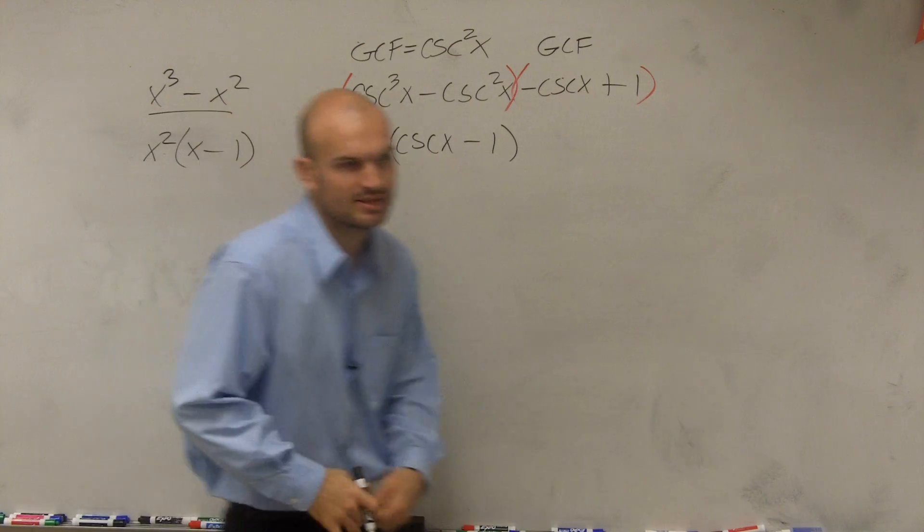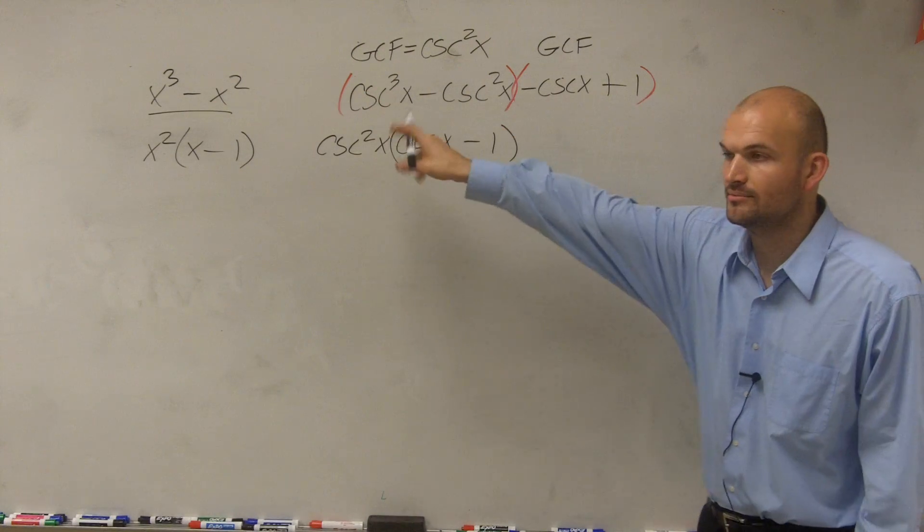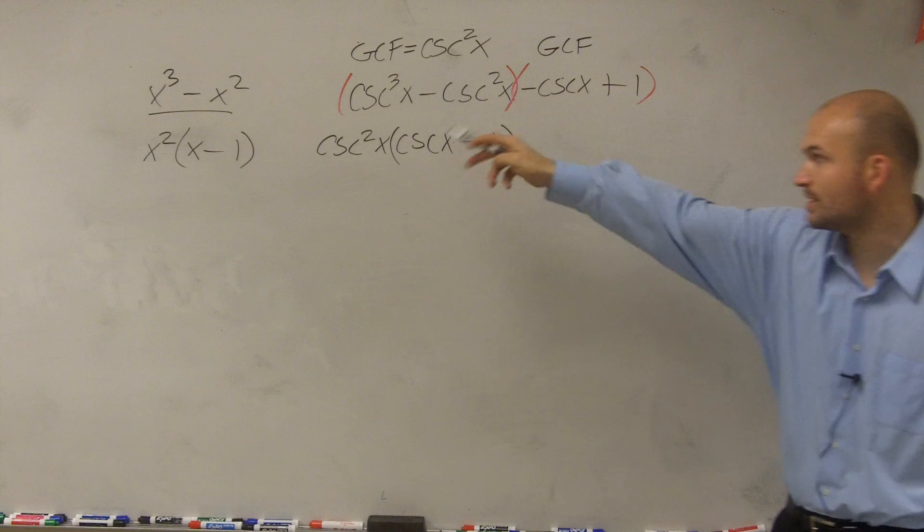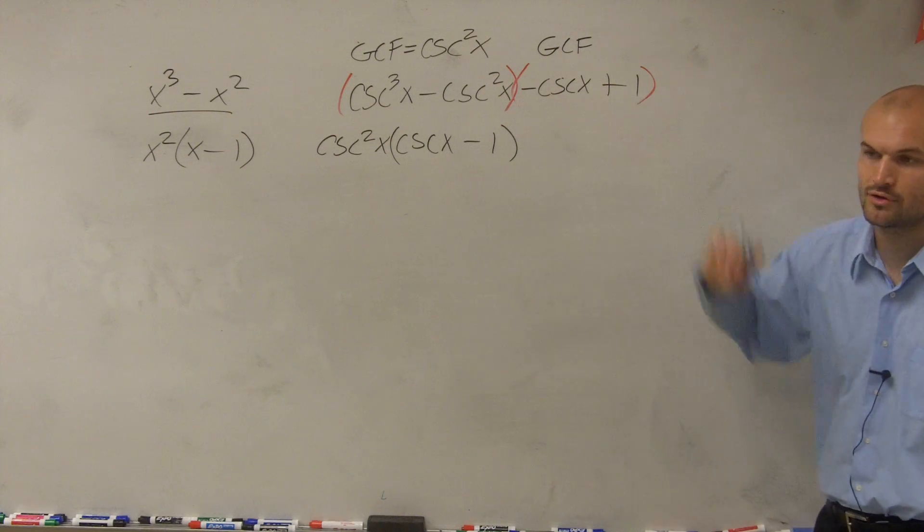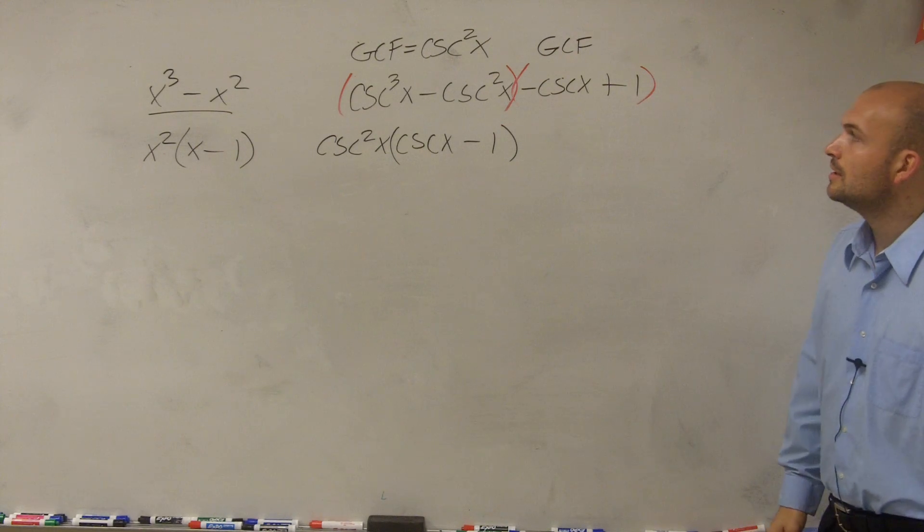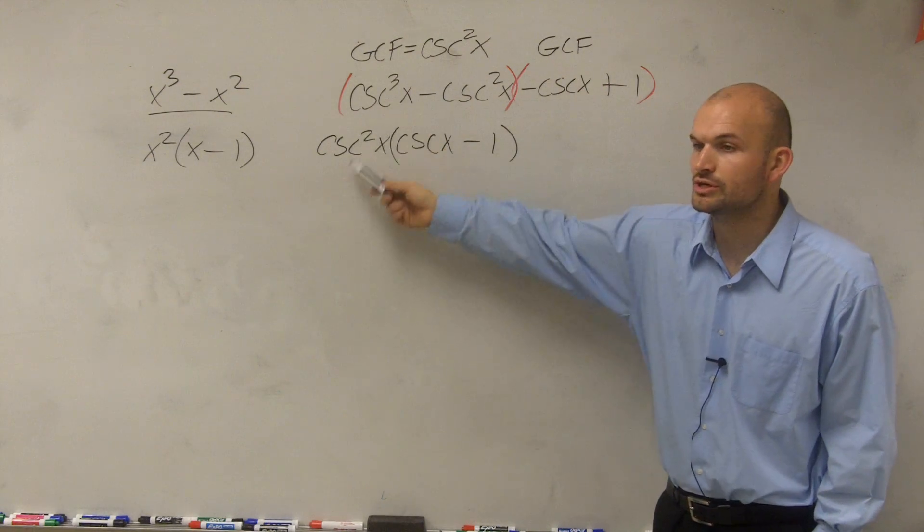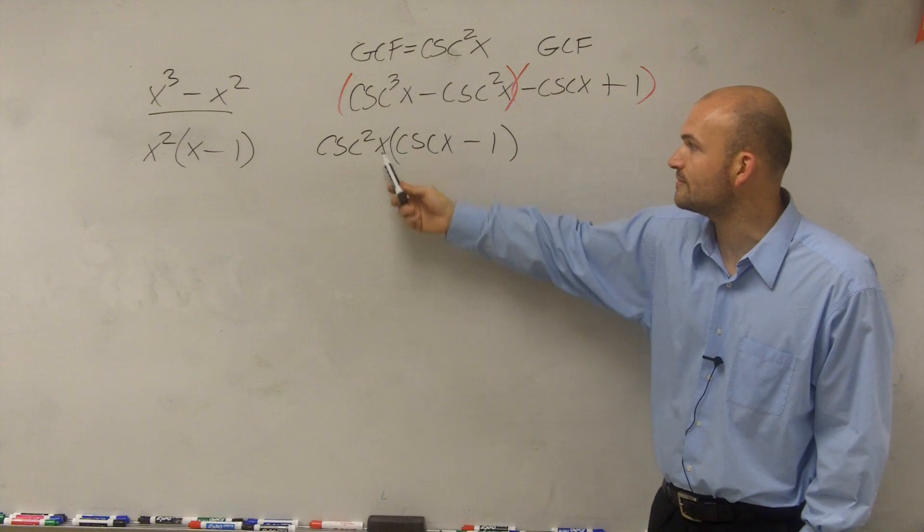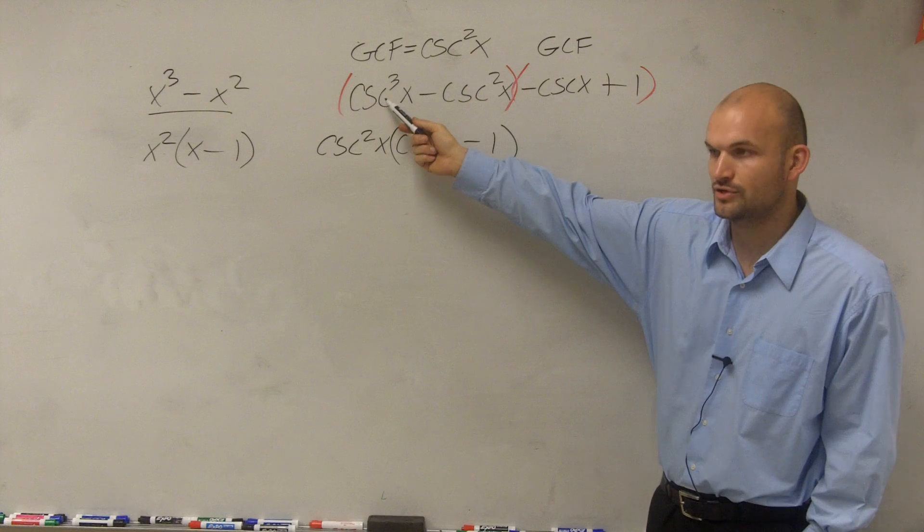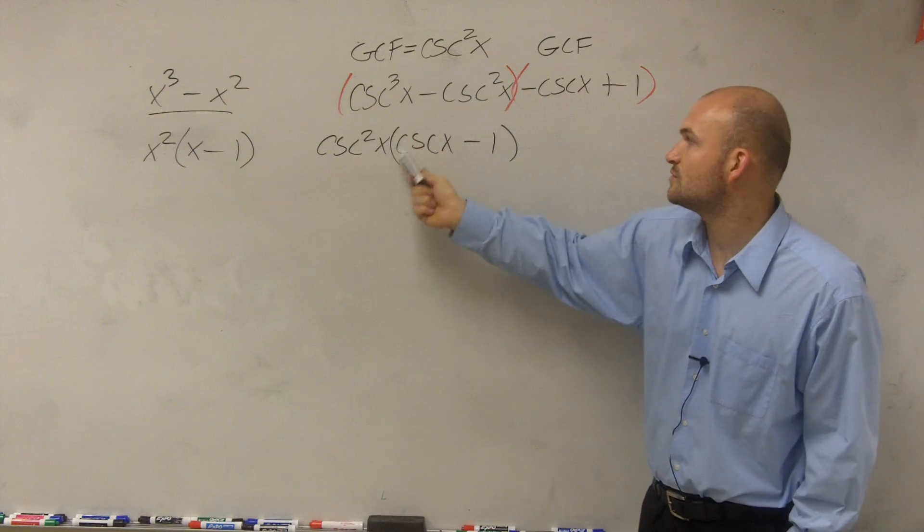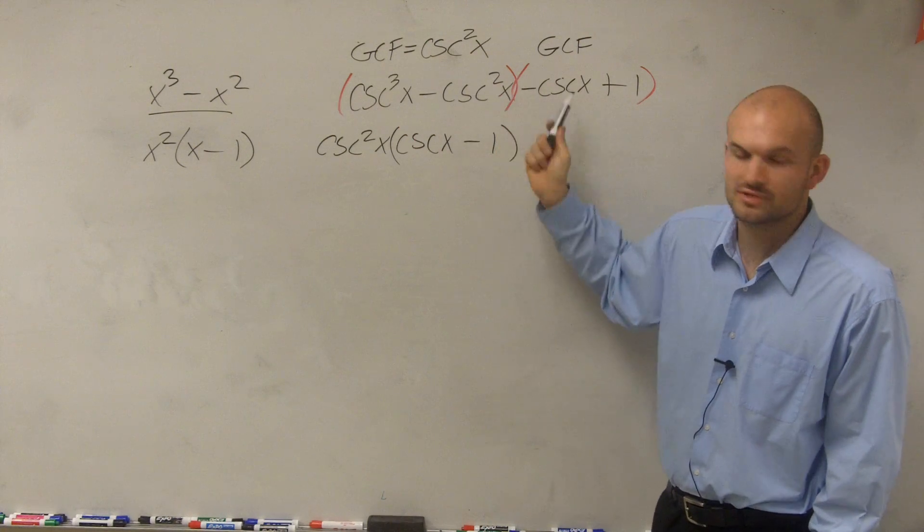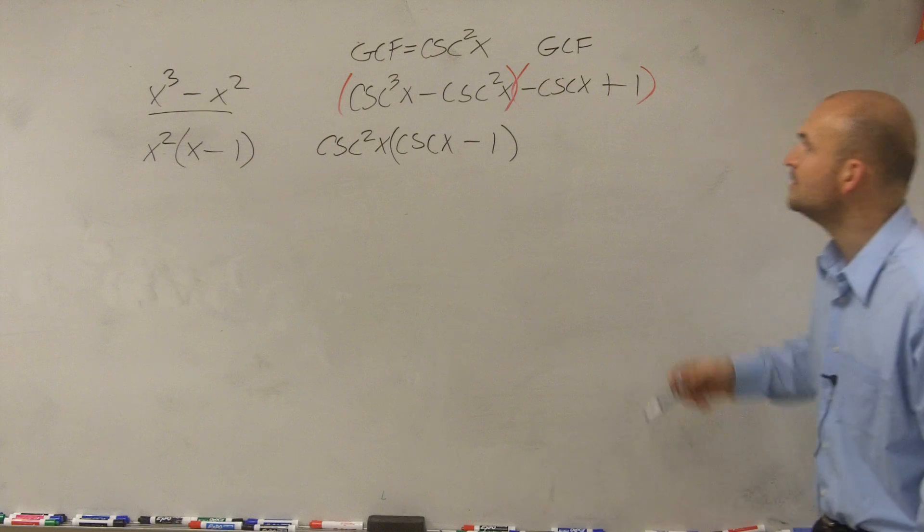Does everybody see what I did, how I did it? It's just like the polynomial I did over there with the GCF, except we have cosecants with it. And then, remember, you can always check your answer when factored by GCF just by using distributive property back. When I do csc²x times cscx, do I get csc³x? Yes. Csc²x times negative 1 gives me negative csc²x. So I did it correctly.